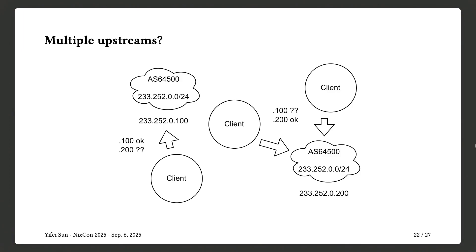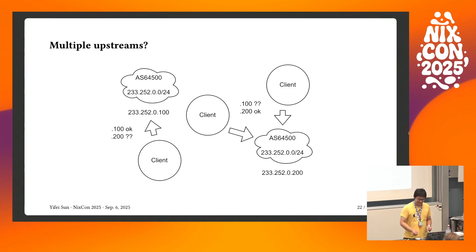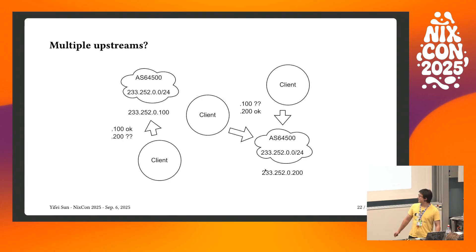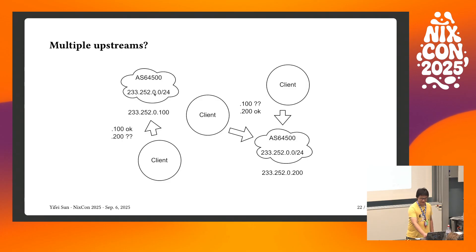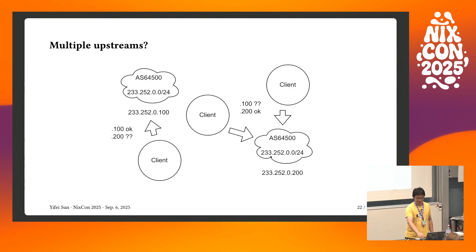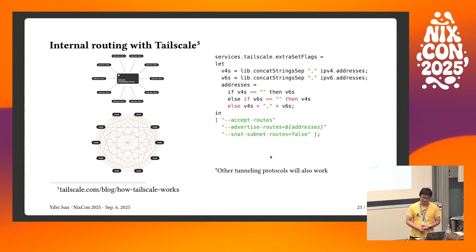The question now is: what if you have multiple upstreams? If you have two servers with two different upstreams and you don't set up internal routing policies, routes exported from one side won't be reachable from the other. This graph shows that if one node is announcing a block with address 100 and the other has address 200, clients on one side will see 100 but won't be able to reach 200 because the two nodes don't know how to communicate with each other.